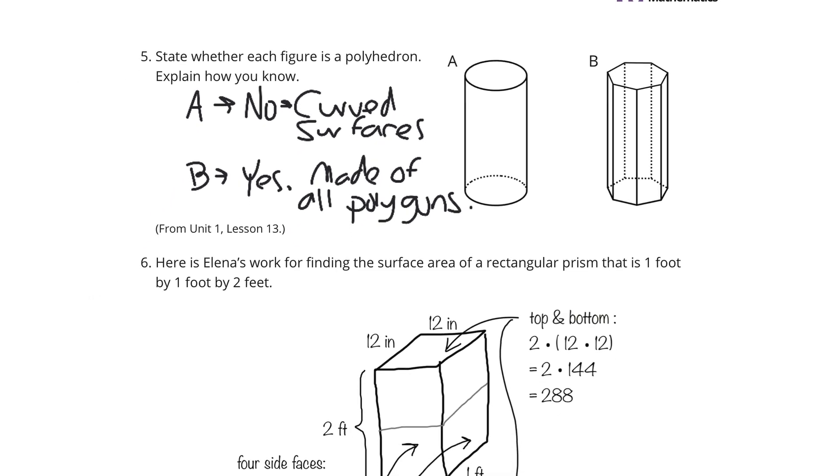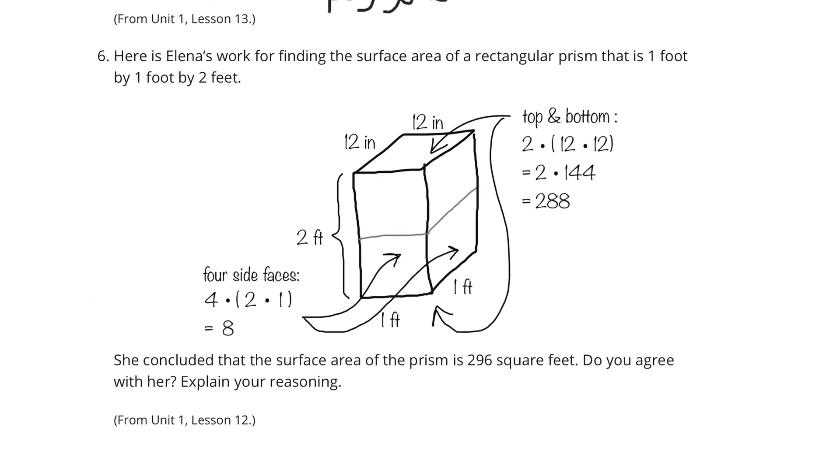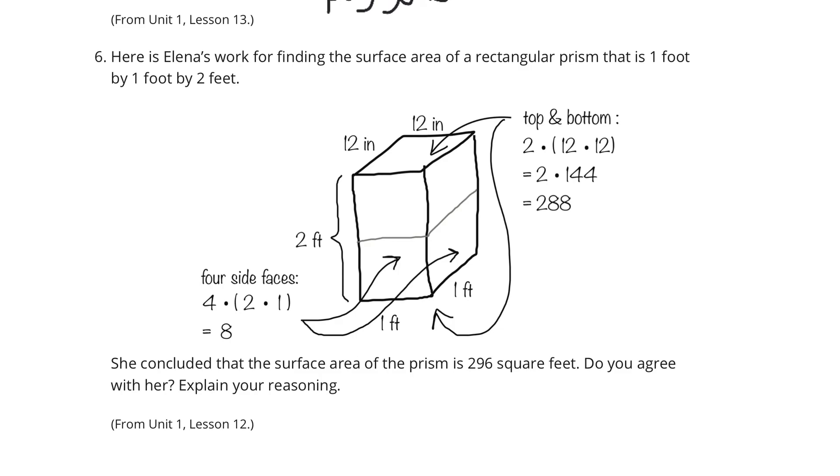And now our last question, question six. Here is Elena's work for finding the surface area of a rectangular prism that is 1 foot by 1 foot by 2 feet. She concluded that her surface area of the prism is 296 square feet. Do you agree with her and explain? Well, I'm going to say no right now, and then we'll get into her work and explain why.